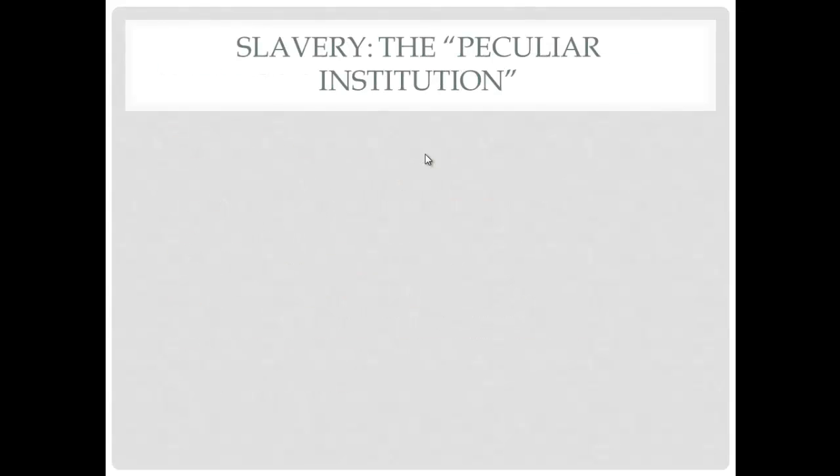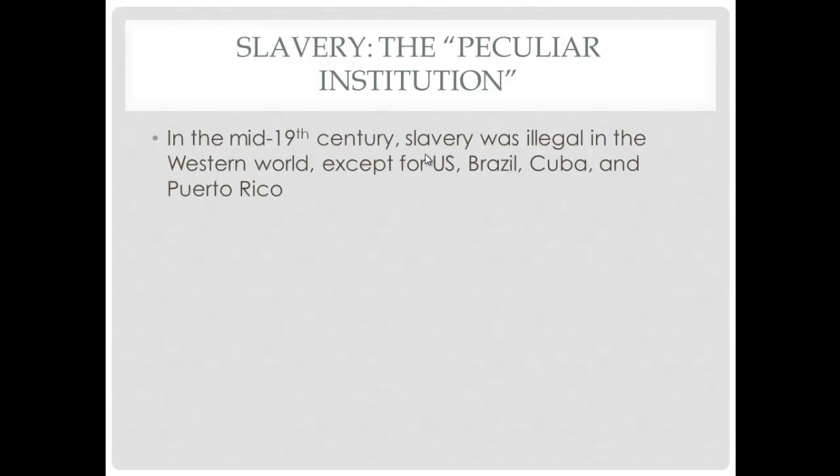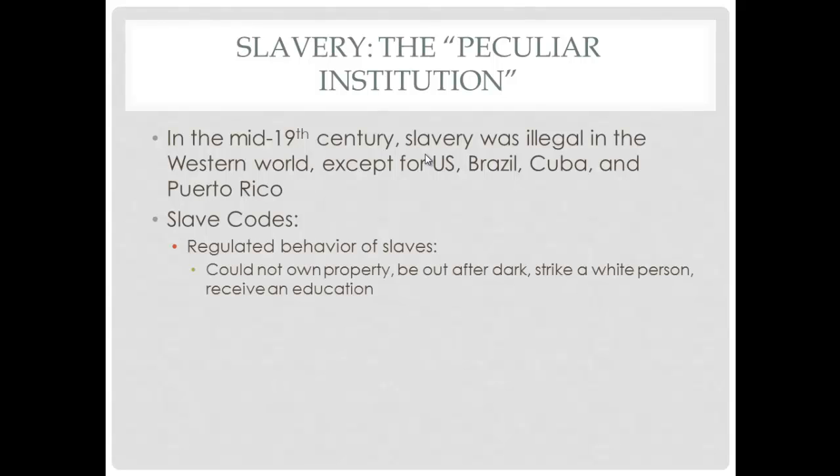The South called slavery the peculiar institution. In the mid-1800s, slavery was illegal everywhere in the Western world except the U.S., Brazil, Cuba, and Puerto Rico. Slave codes were instituted in the South to regulate the behavior of slaves: they could not own property, be out after dark, strike a white person even in self-defense, receive an education, learn to read or write, or be married. These were incredibly harsh laws.